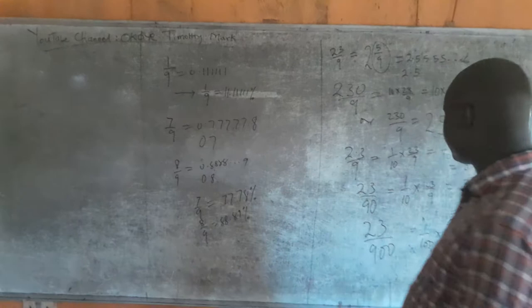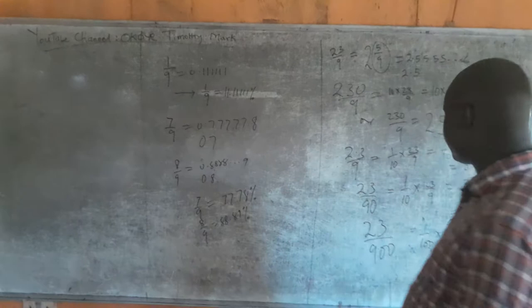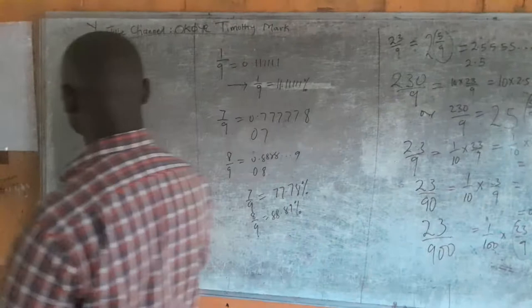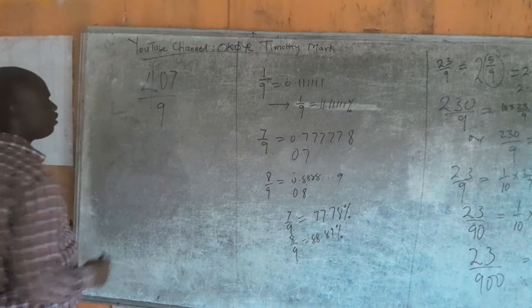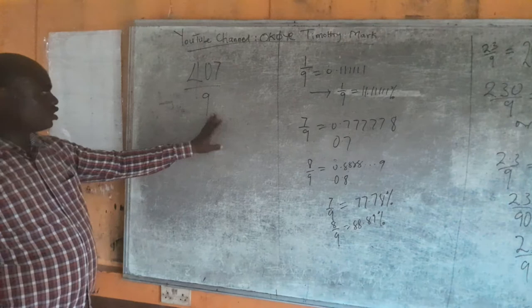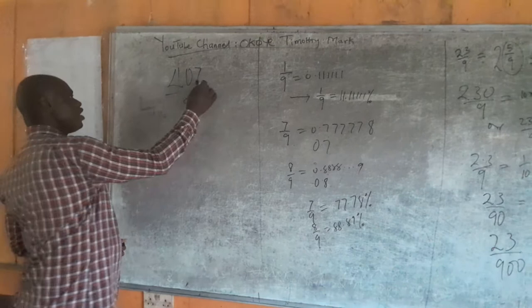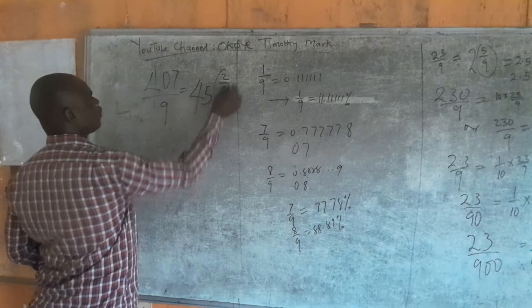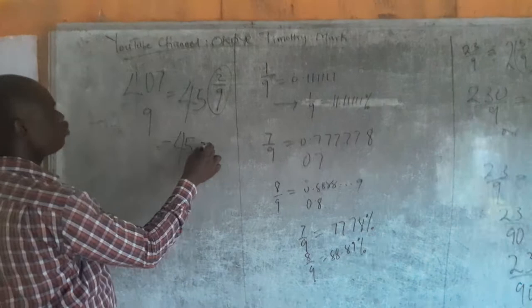With this you can see that any whole number, even something like 407 divided by 9, I don't have any problem with it. 405 is already 9 times 45, so I have 45 whole number 2/9. Now 2/9 is 0.222, so this becomes 45.222, which is 45.2 with a dot.